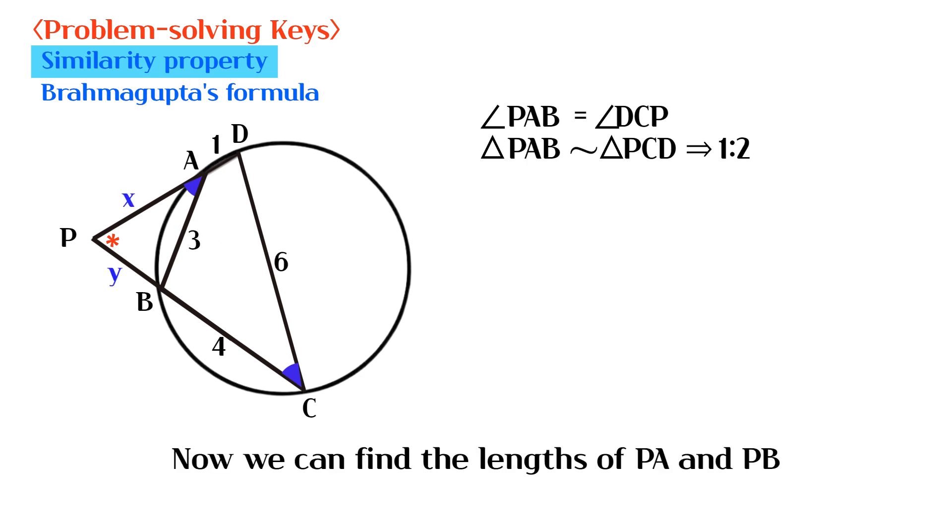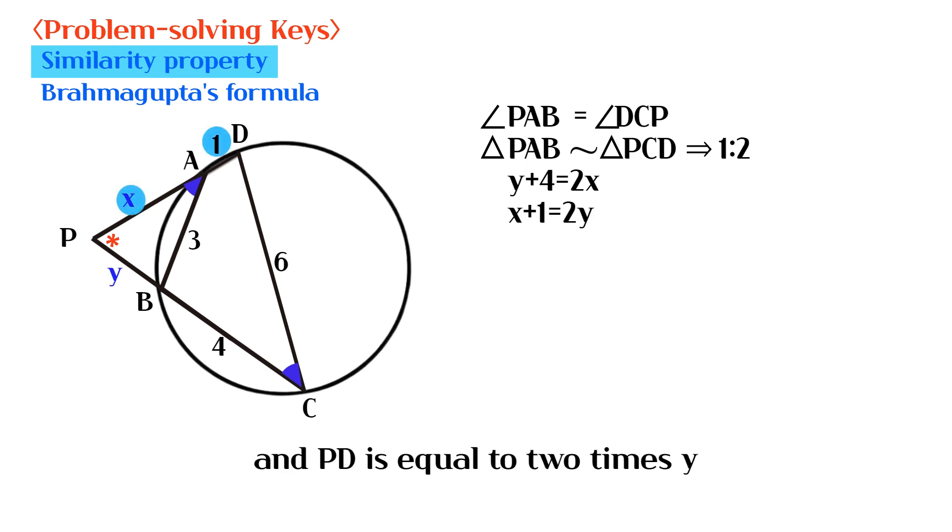Now we can find the lengths of PA and PB. PC is equal to 2 times X, and PD is equal to 2 times Y.